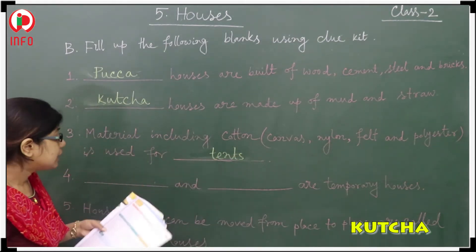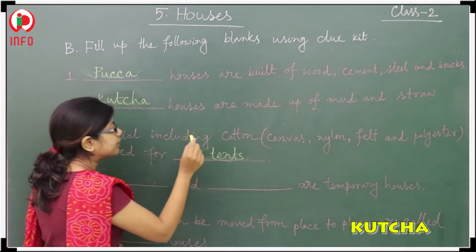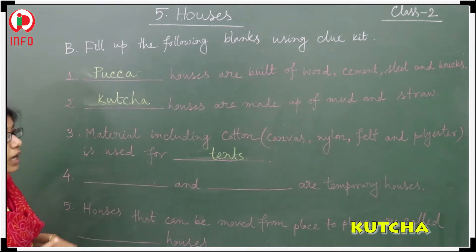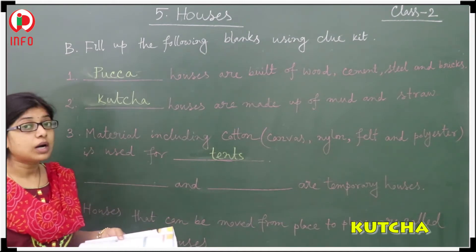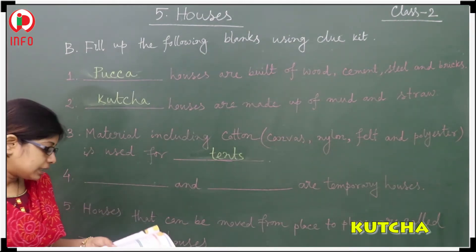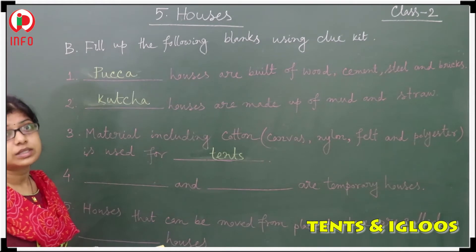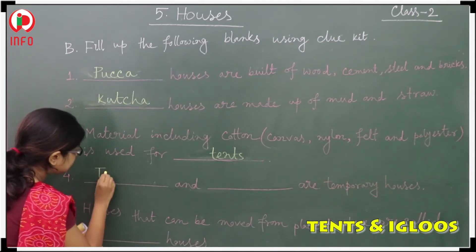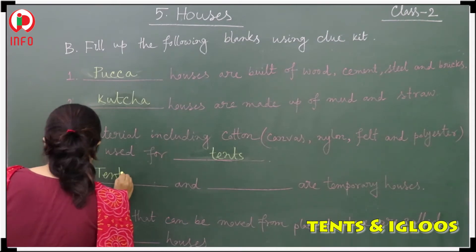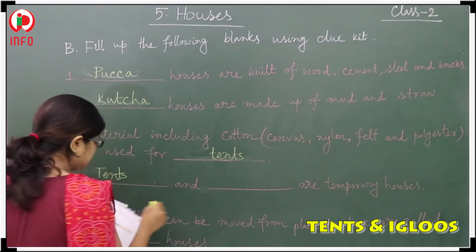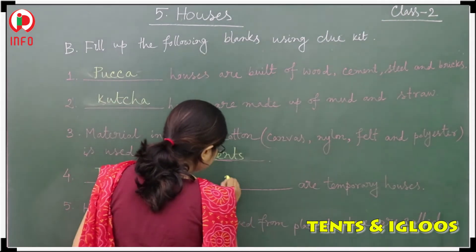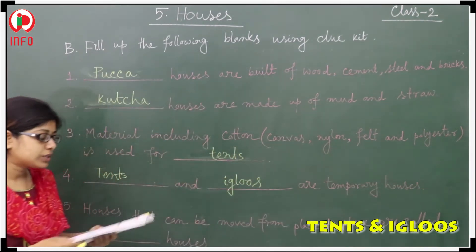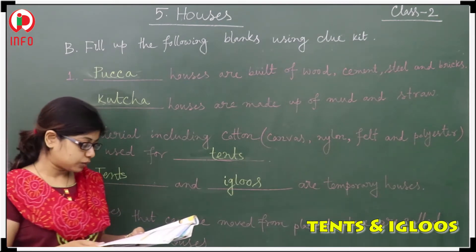The fourth blank: dash and dash are temporary houses. What are the temporary houses? The tents and igloos — they are the temporary houses. So you have to write tents — T-E-N-T-S — and igloos — I-G-L-O-O-S.